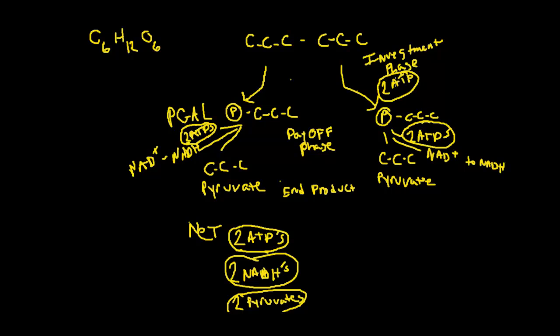but again, we've already used two ATPs up here. So we net two ATPs from that, and here we've reduced NAD plus to NADH and NADH over here. So it gave us two NADHs, and then we got two pyruvates. And so that's what we have done here.